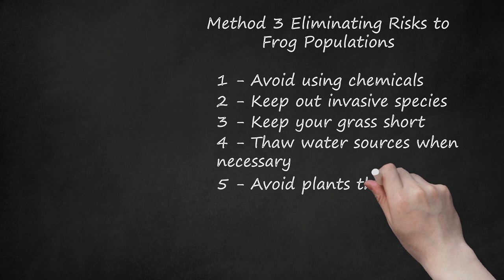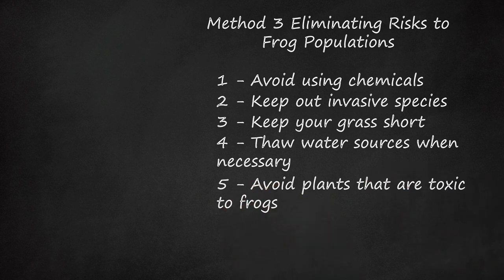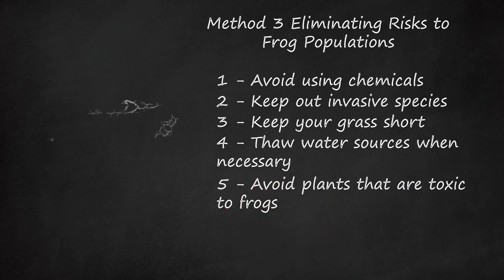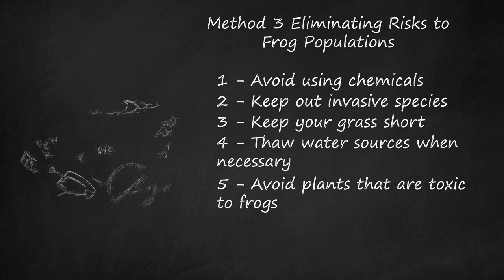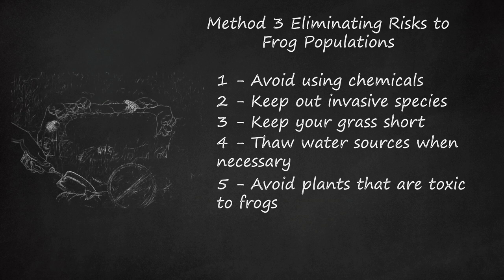5. Avoid plants that are toxic to frogs. Many flowers and vegetables are poisonous to frogs. Protect the amphibian population in your yard or garden by either not planting species that are toxic to them or by planting them well away from your intended frog habitat. Vegetables that are dangerous for frogs include eggplant, rhubarb, snow peas, and potatoes.